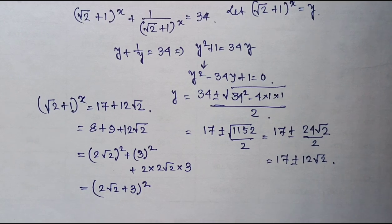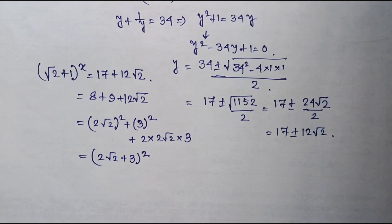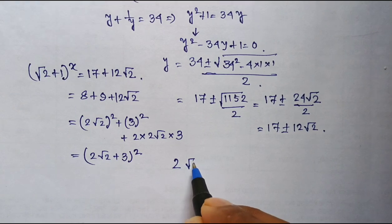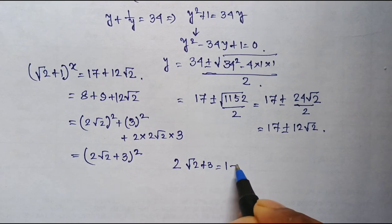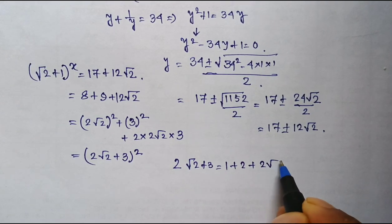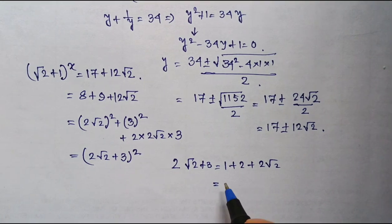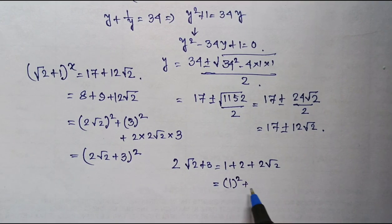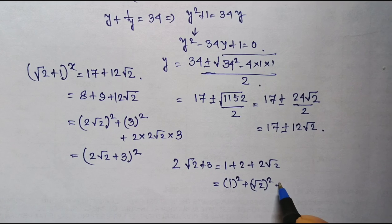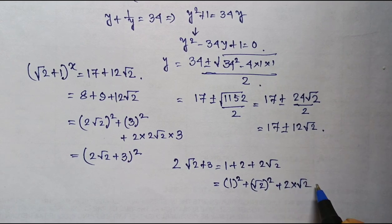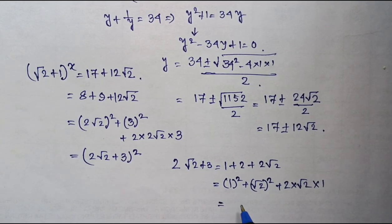Again, I will be computing 2 root 2 plus 3 as 2 root 2 plus 3 can be written as 1 plus 2 plus 2 root 2. That is 1 whole square plus root 2 whole square plus 2 into root 2 into 1, which is nothing but 1 plus root 2 whole square.